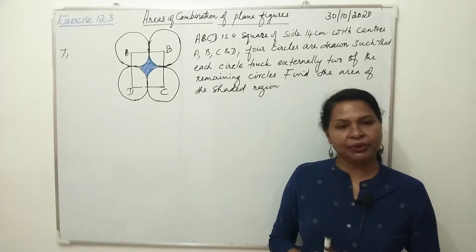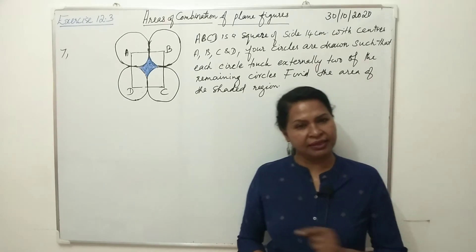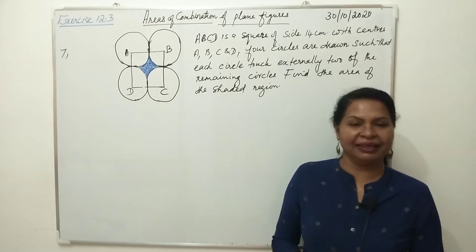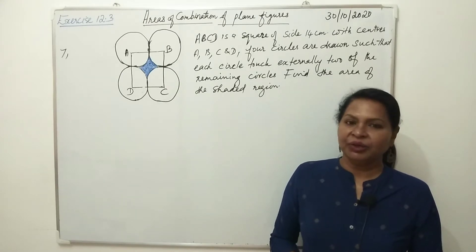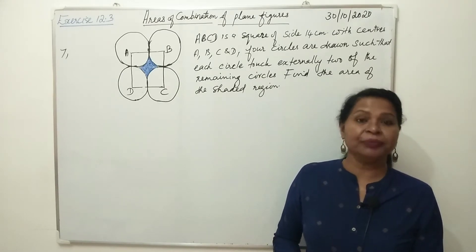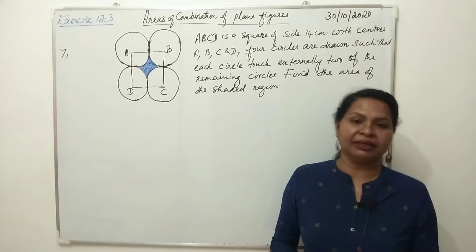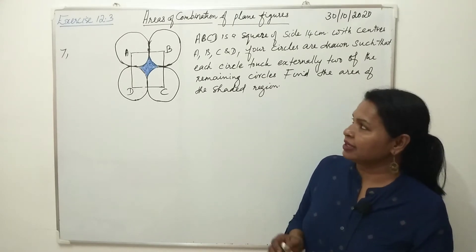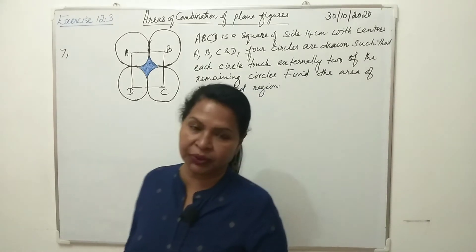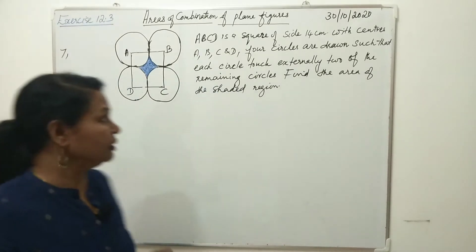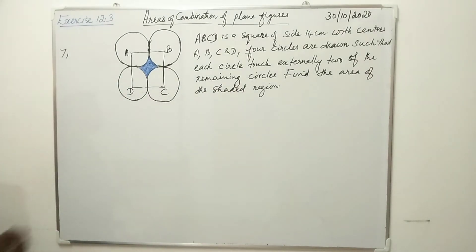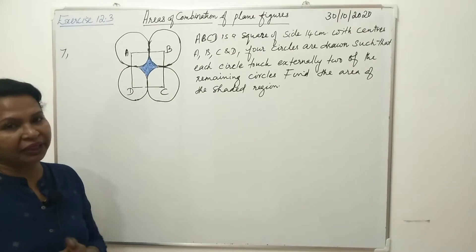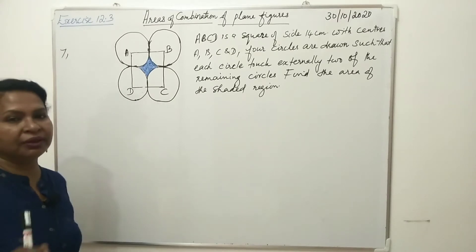In the first class, I had a question. We will ask you about the questions in 12.3. In the sixth question, the triangle and the central angle is 120 degrees. I am not going to ask you about the exam.